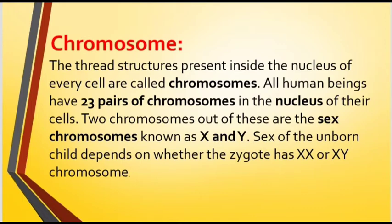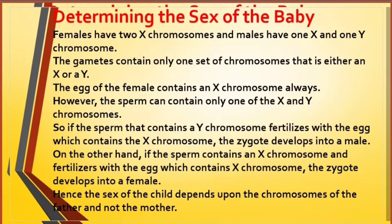Sex of the unborn child depends on whether the zygote has XX or XY chromosomes. Females have two X chromosomes and males have one X and one Y chromosome. The gametes contain only one set of chromosomes, either an X or Y. The egg of the female contains an X chromosome always.